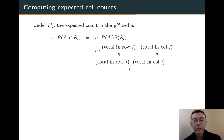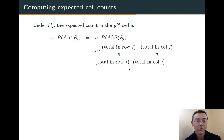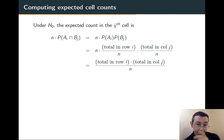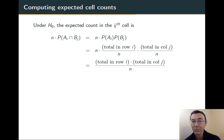Let's get expected cell counts. We get them by multiplying the probability that an individual falls into any particular cell — the probability of A_i intersect B_j — by the total sample size N. If the null hypothesis is true, that probability factors as the probability of A_i times the probability of B_j. Substituting in the expressions we have for those two probabilities and simplifying, we get the relatively simple expression: the expected cell count equals the row total times the column total divided by the total sample size.